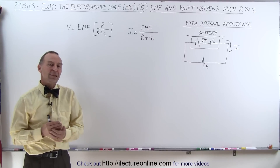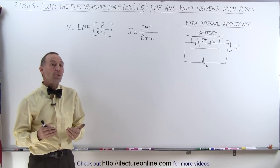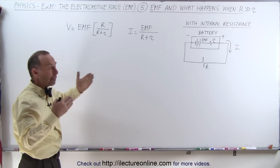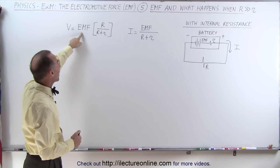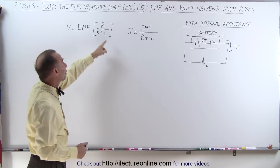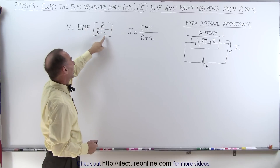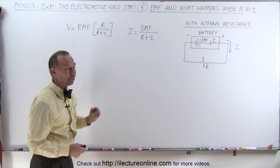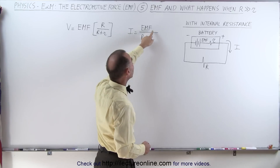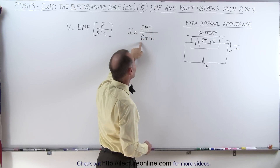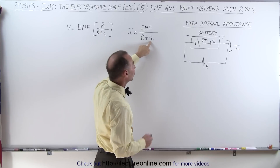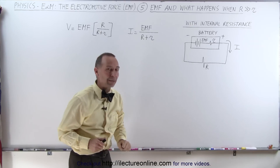Welcome to White Lake Turnline. In the previous video we established that the voltage provided by the battery is equal to the emf of the battery times this ratio, which depends on the relative size of the resistance of the circuit and the internal resistance of the battery. We also established that the current to the circuit was equal to the emf of the battery divided by the total resistance, made up of the resistance of the circuit plus the internal resistance of the battery.